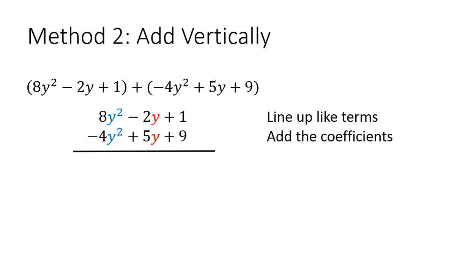Then we're going to add the coefficients. So we do 8 minus 4, that's 4y². Then we do -2 plus 5, that's 3y. And then 1 plus 9, which is 10.